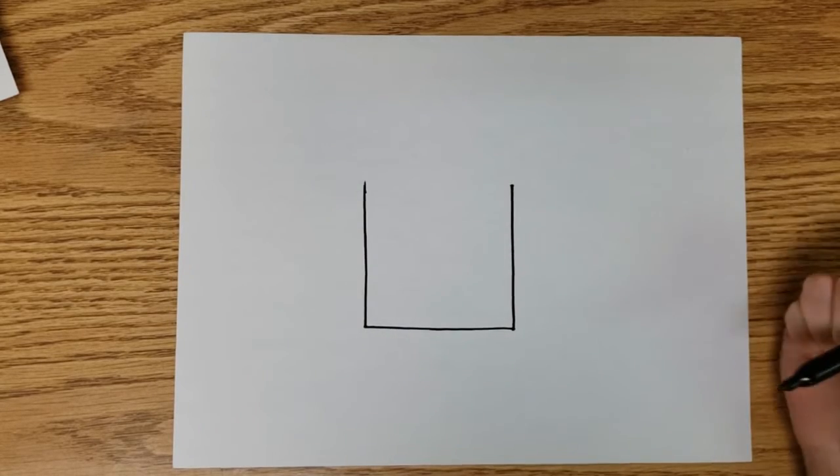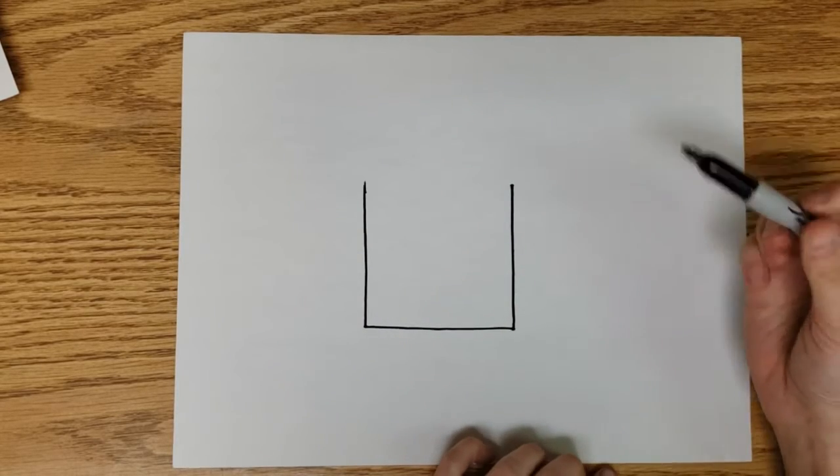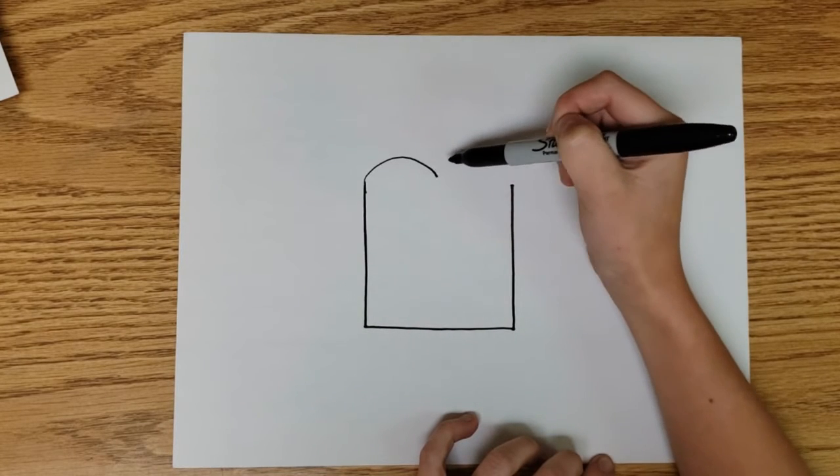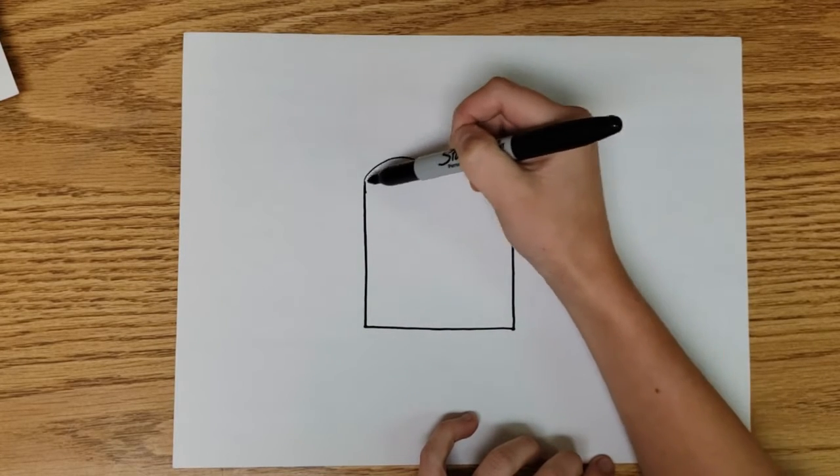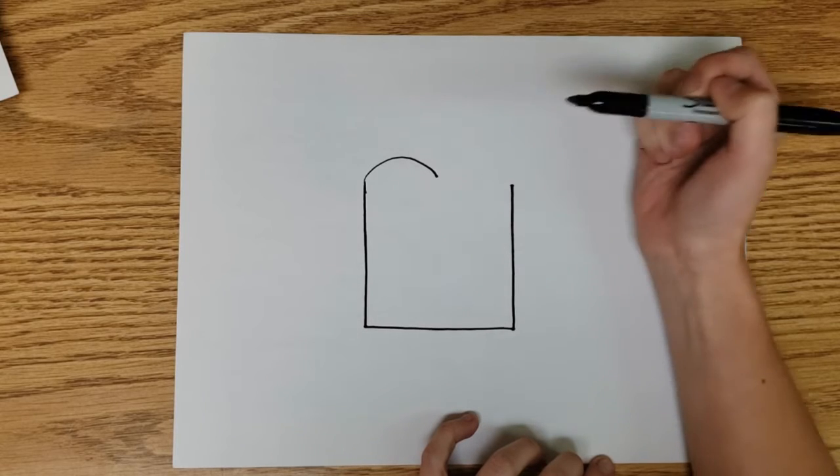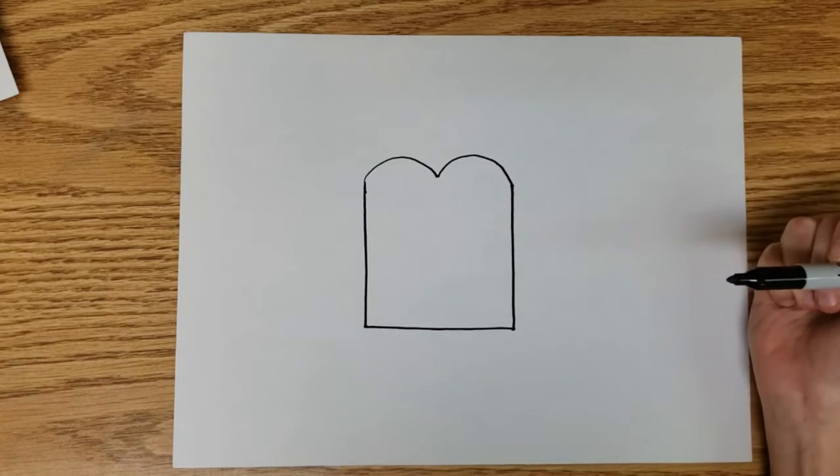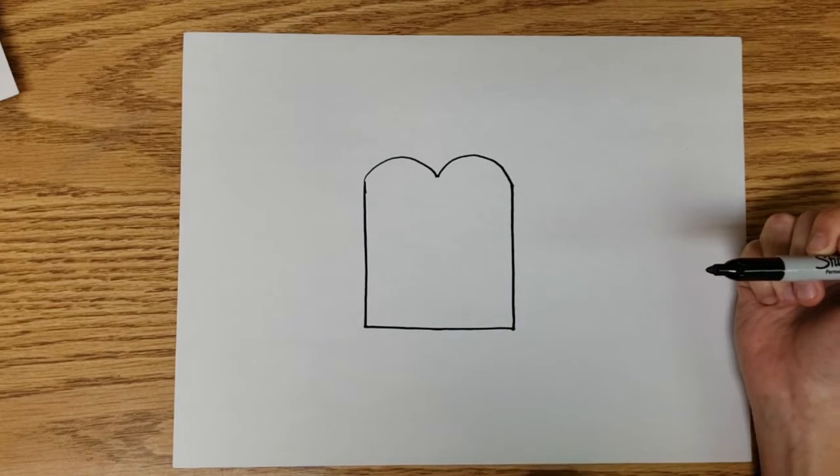Next, what we're gonna do is we're gonna create kind of a heart shape, the top of a heart. It almost looks like a hill and then it comes to the center, and we're gonna do a second one too. That's a very basic piece of bread and I think we should add a little more to that.